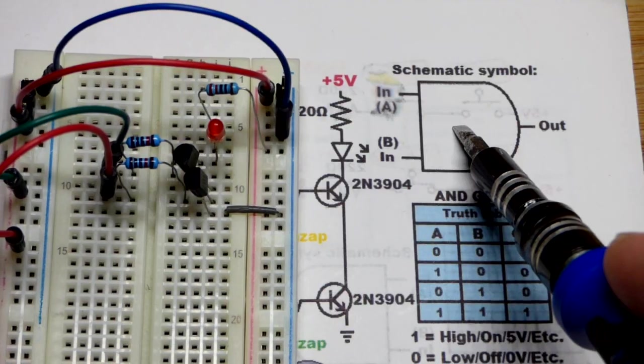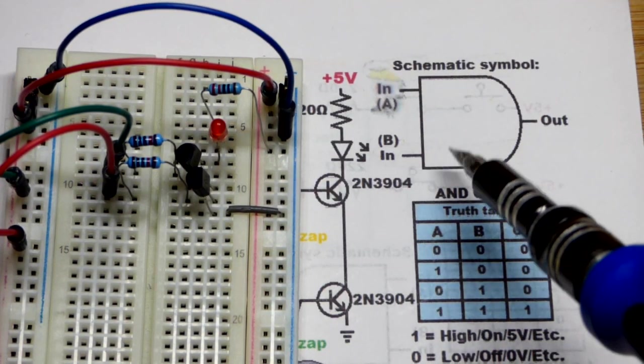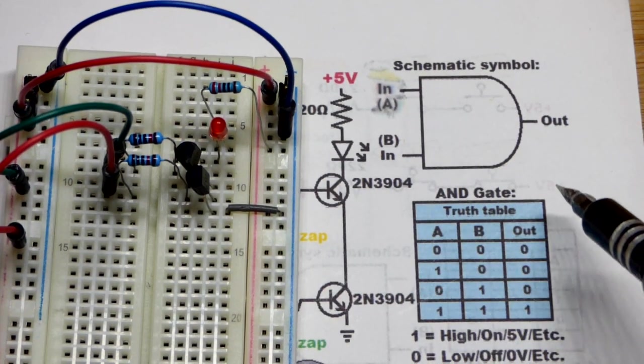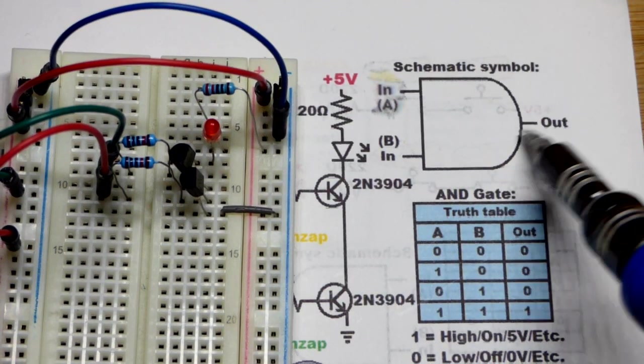Here's the schematic symbol for the AND gate. I've got a drop of water on there. But yeah, that's input A right there. Should still be able to read that. And the output there.